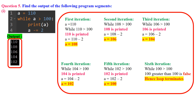Question 5, subdivision 1: Find the output of the following program segment. This code uses a while loop that repeatedly executes a block of code as long as the condition a > 100 holds true. In line 1, a is assigned the value 110. The loop starts checking whether a > 100.